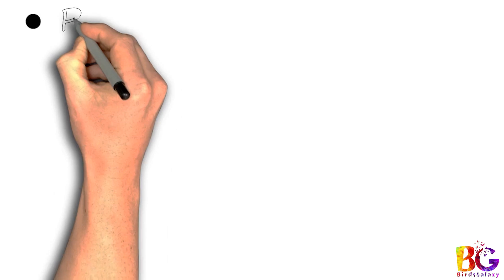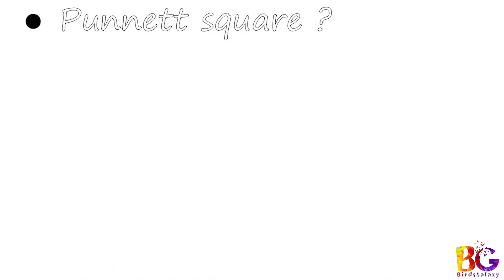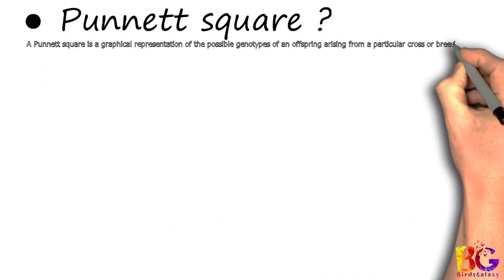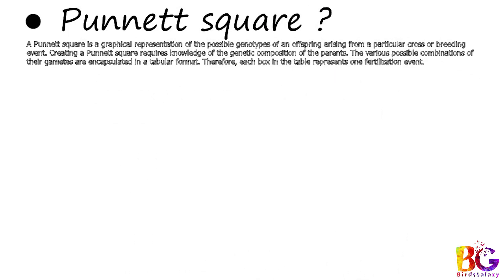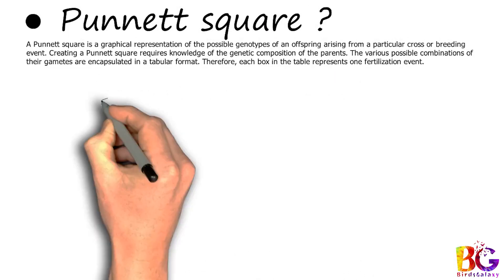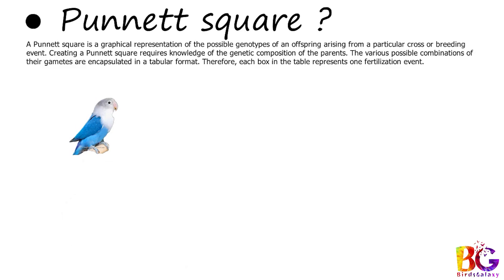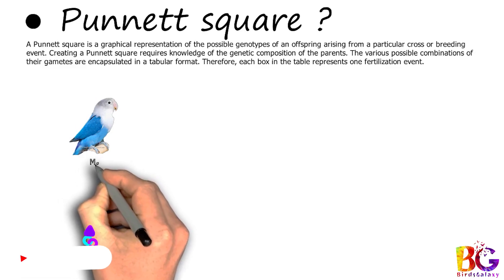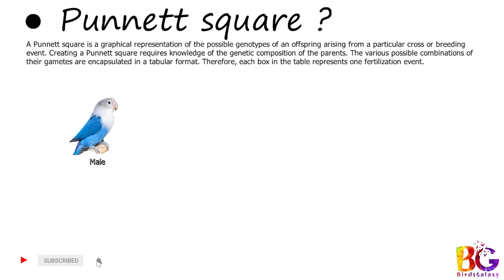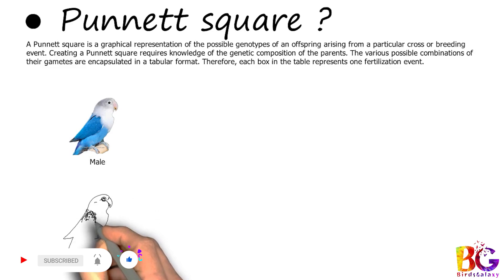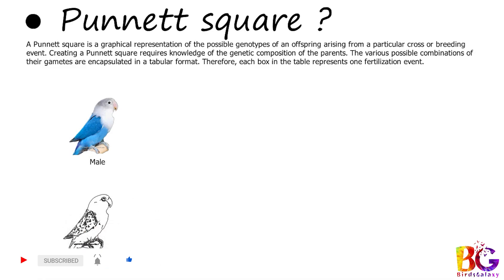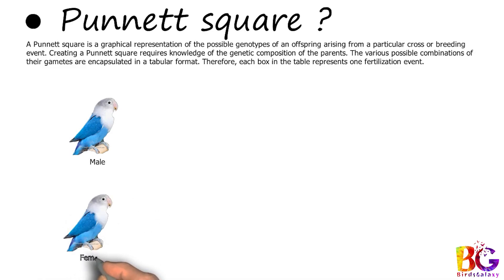So what is a Punnett Square? A Punnett Square is a graphical representation of the possible genotypes of an offspring arising from a particular cross or breeding event. Creating a Punnett Square requires knowledge of the genetic composition of the parents. The various possible combinations of their gametes are encapsulated in a tabular format. Therefore each box in the table represents one fertilization event.